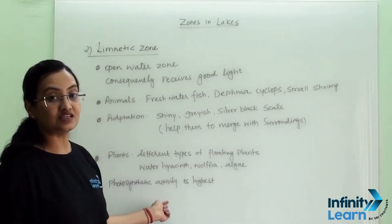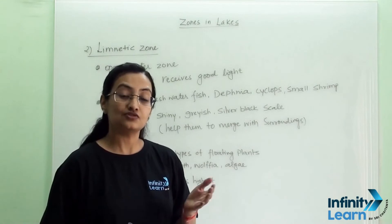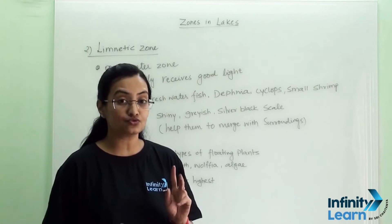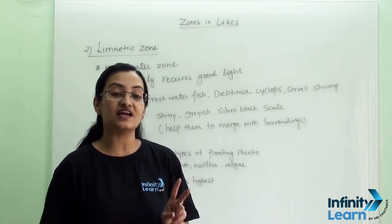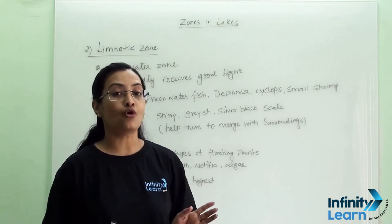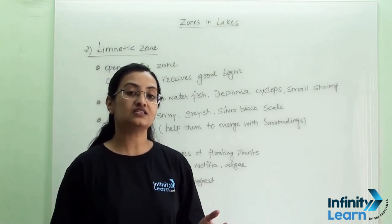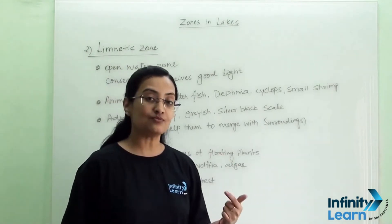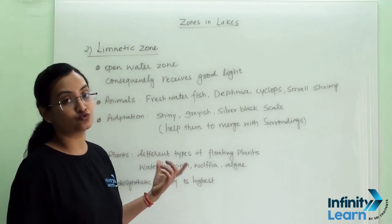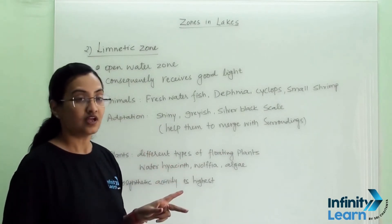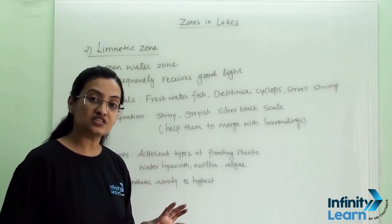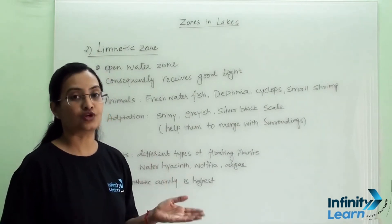Photosynthetic activity is highest in the littoral and limnetic zones. Both receive a good amount of light, so they are both termed the photic zone, meaning we can see a significant amount of photosynthetic activity and plant life in these two zones.